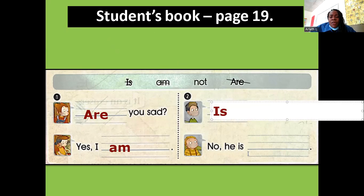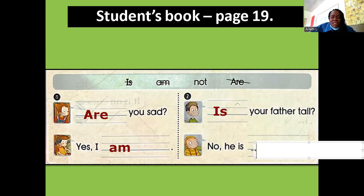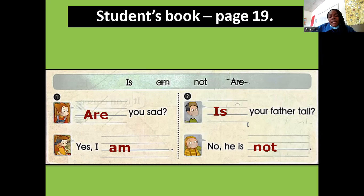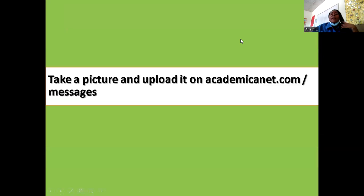No, he is not. No, he is not. He is not sad, he is not tall. Right, write down please. I complete the sentence. Okay guys, so let's continue here please. Guys, everybody take a picture. I'm uploading on academicanet.com a message. Send a message to the teacher.